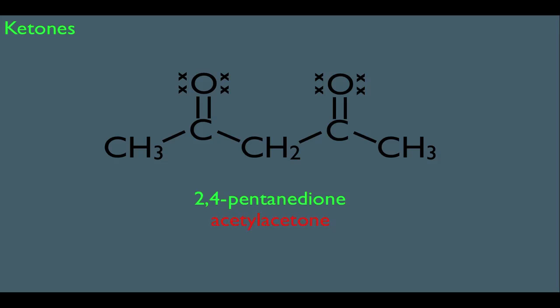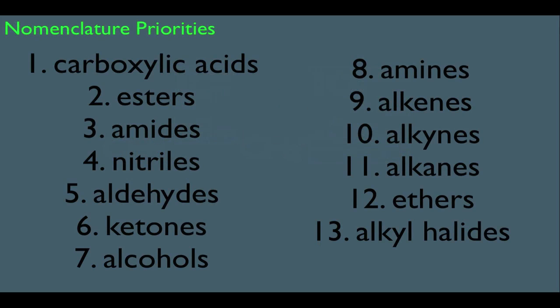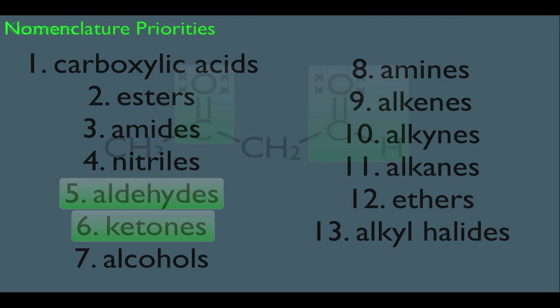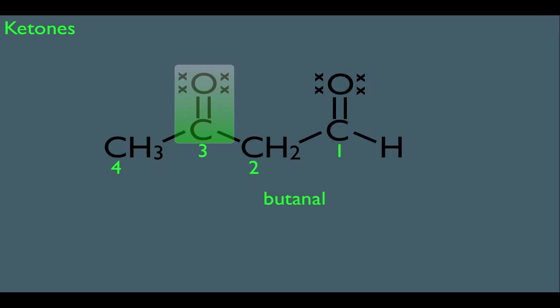What if a molecule has both an aldehyde and a ketone? Who has higher priority? Looking at our chart, aldehydes are 5 and ketones are 6, so the aldehyde takes priority. Going back to the molecule, the aldehyde is carbon 1 within the chain. Since it's 4 carbons long, the parent name is butanal. Next, we emphasize where the ketone is using 3-oxo. So the name of this molecule is 3-oxobutanal.